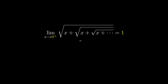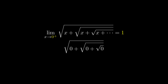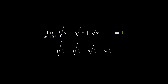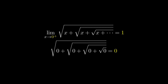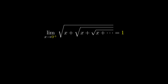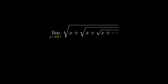The answer is 1. Where does this 1 come from? This is counterintuitive, because the nested radical, no matter how deep it is, as long as it's finite, the result is going to be 0. Therefore, this 1 must come from the fact that this radical is infinitely nested.